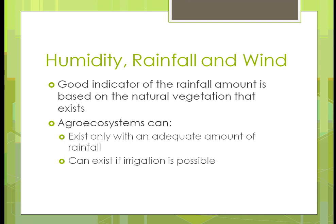A good indicator of the rainfall amount is based on what type of natural vegetation you have, because the vegetation will assist in providing a way to get more rainfall. But in order to have an agri-ecosystem, you need to make sure you have an adequate amount of rainfall. If you don't have enough rain, you're not going to have the crops, the ecosystem's not going to work, and plants aren't going to grow in that area, or they'd have to adapt.